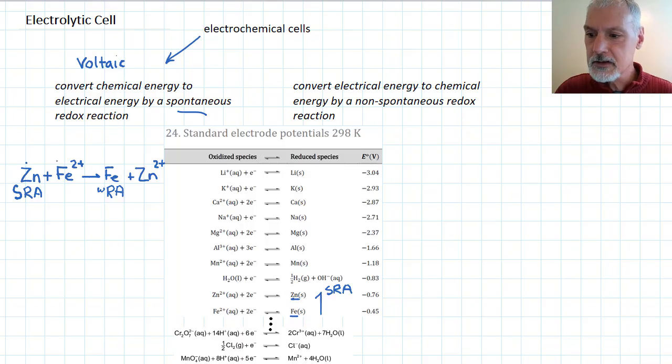We can also take a look at our two reactants and where they are on the table. Zinc and iron ions. They lie in a position that slopes upwards to the right. We call that the spontaneous diagonal. Any two species that are located on this slope rising up to the right would be considered a spontaneous combination.